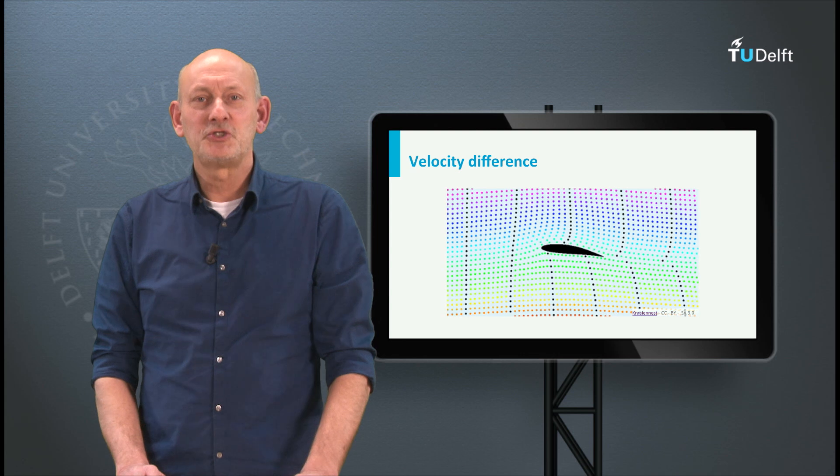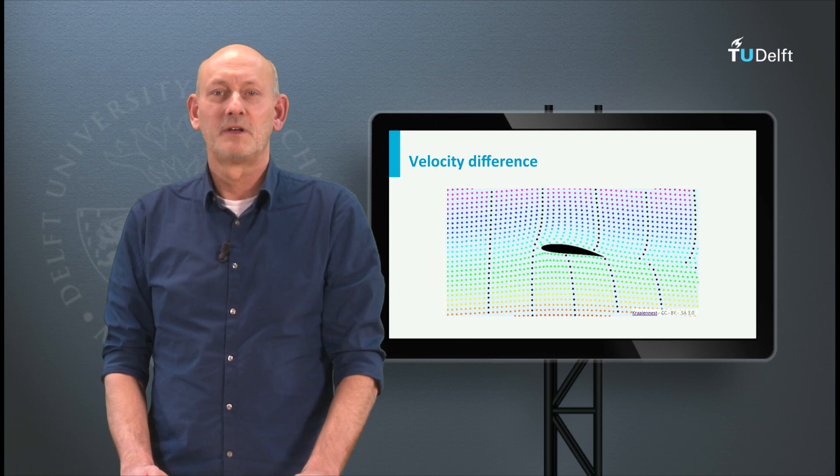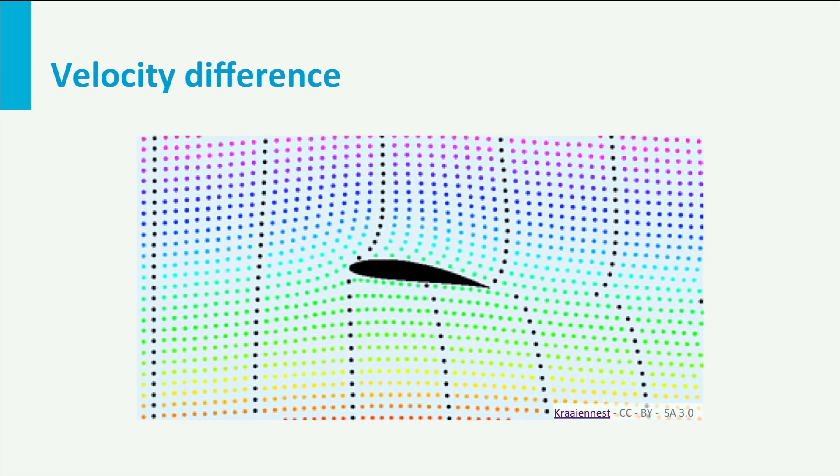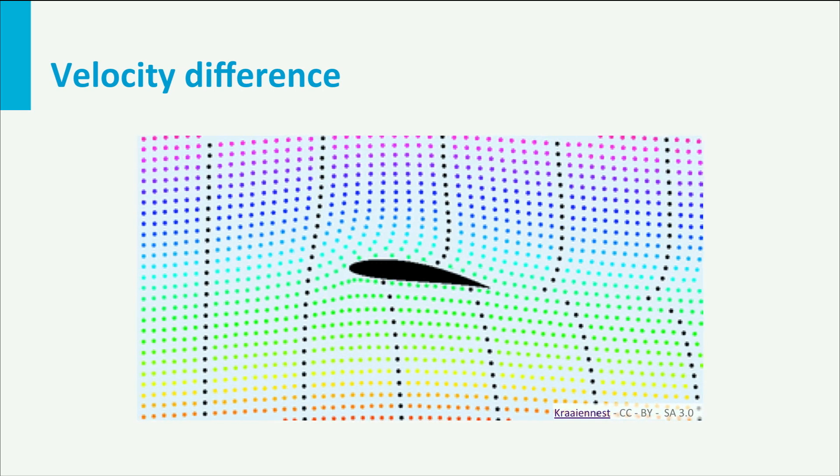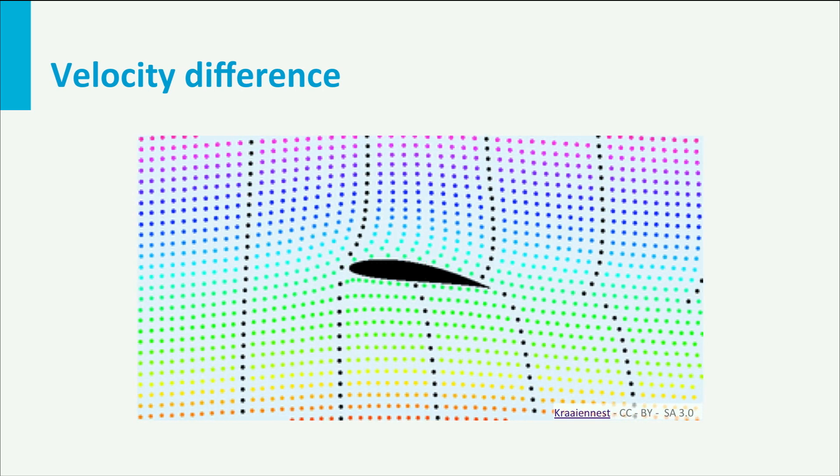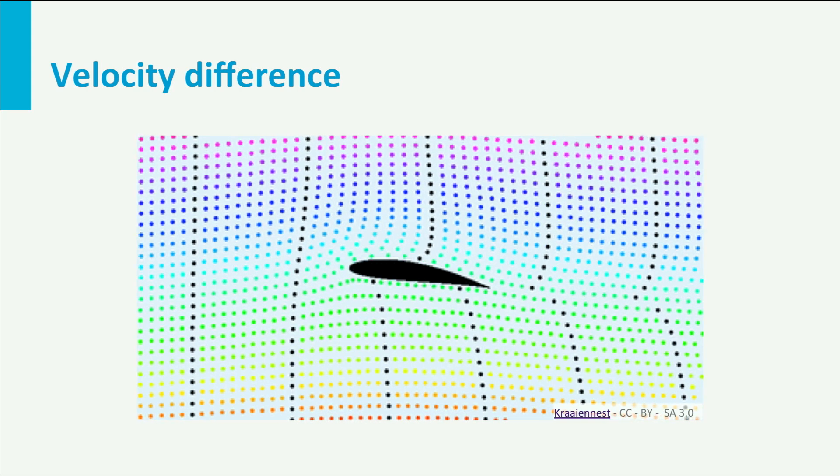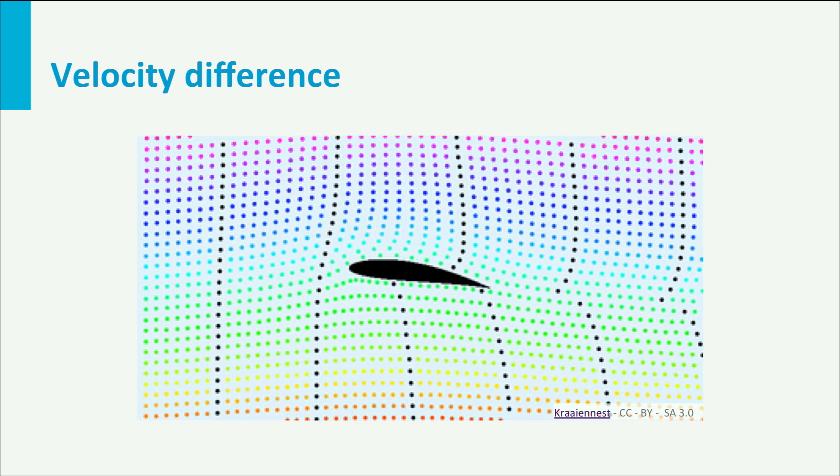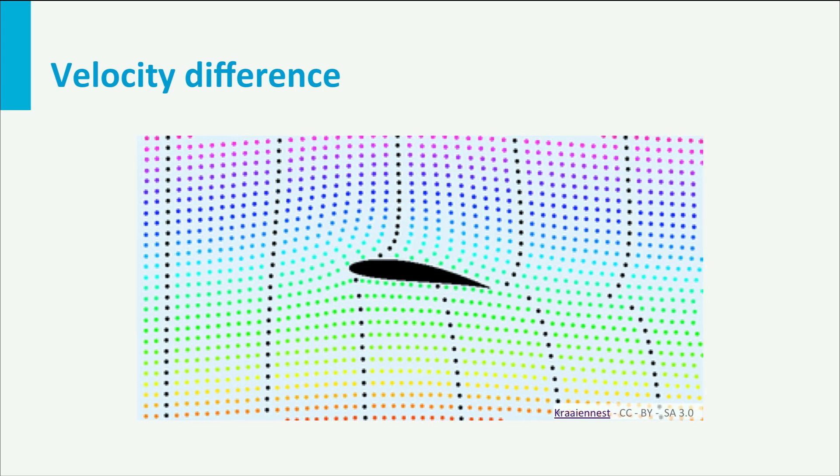This animation nicely shows the velocity changes as the air moves over an airfoil. You can see that already in front of the airfoil the presence of the airfoil can be noticed. Velocity changes give pressure changes and these move with the speed of sound. As long as we are far below Mach 1, these changes in the flow at the position of the airfoil will also be felt upstream.